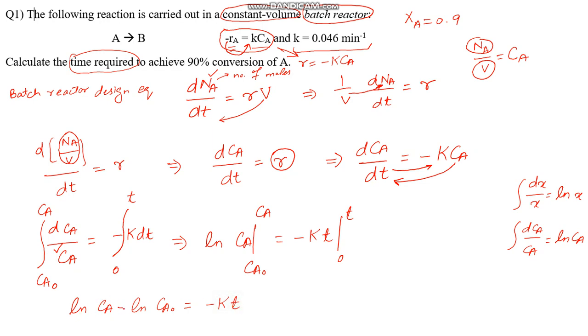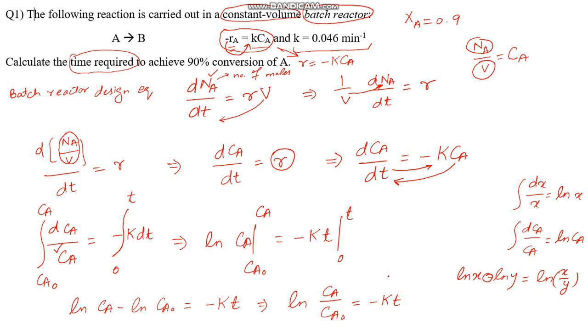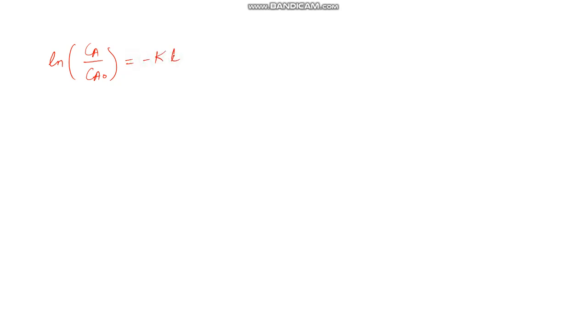Using the property of natural logs: ln(X) − ln(Y) = ln(X/Y). So ln(CA) − ln(CA0) can be written as ln(CA/CA0). Therefore, the equation becomes ln(CA/CA0) = −kT.